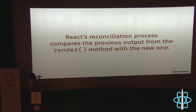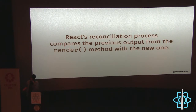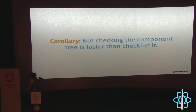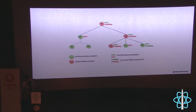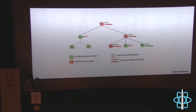React's reconciliation process calls the render function on everything in order to see if the rendered output has changed. Obviously, not calling render is faster than calling it. One way to bypass rendering is `shouldComponentUpdate` — every time props or state change, this method is called and asks: should I even bother calling the render function? If we can skip it, that's faster. Here's a diagram from the React docs: if the virtual DOM is equal at a parent node, it doesn't go down the tree anymore.